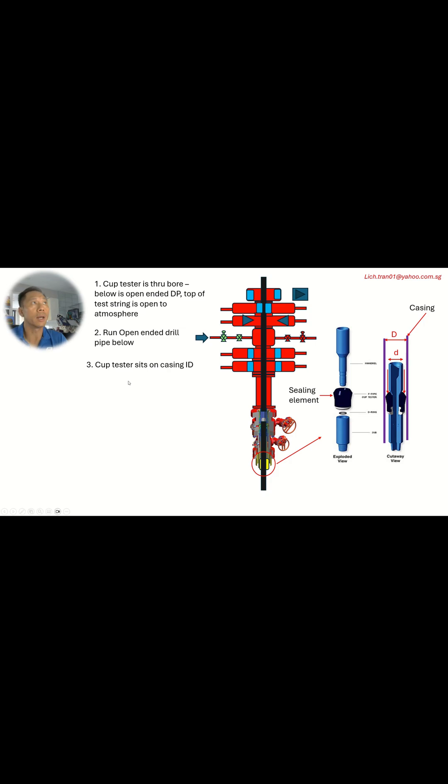And the cup tester, where does it sit? It doesn't sit on the wellhead. It sits inside the ID of the casing. So in here you see the wall here, the purple wall, here is the wall of the casing. The big capital D is ID of the casing. The small lowercase d is the outer diameter of the drill pipe, where you run your test cup on.